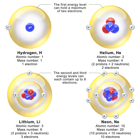A thermal neutron is a free neutron that is Boltzmann distributed with kT = 0.0253 eV at room temperature. This gives a characteristic speed of 2.2 km per second. The name 'thermal' comes from their energy being that of the room temperature gas or material they are permeating. After a number of collisions with nuclei, neutrons arrive at this energy level, provided that they are not absorbed. In many substances, thermal neutron reactions show a much larger effective cross-section than reactions involving faster neutrons, and thermal neutrons can therefore be absorbed more readily by any atomic nuclei that they collide with, creating a heavier and often unstable isotope as a result. Most fission reactors use a neutron moderator to slow down, or thermalize, the neutrons that are emitted by nuclear fission so that they are more easily captured, causing further fission. Others, called fast breeder reactors, use fission energy neutrons directly.